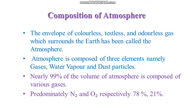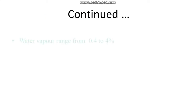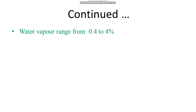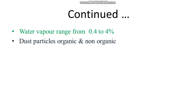Nitrogen makes up 78% and oxygen 21% of the atmosphere. The second element, water vapor, ranges from 0.4 to 4%. The third element is dust particles, which are of two types: organic and non-organic dust particles.